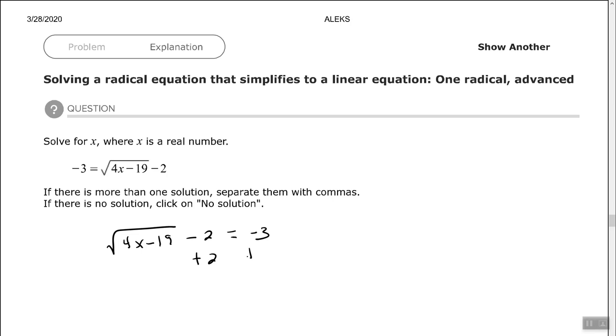So I need to add 2 to each side first since it's not underneath my radical. So I have the square root of 4x minus 19 equals negative 1. The radical is isolated. It's telling me that the square root of some number equals negative 1 which is not possible. So my answer here is no solution.